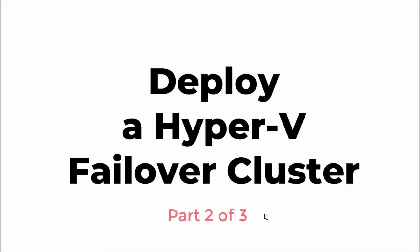Welcome back to part 2 of this video series. In part 2, I'm going to discuss the configuration of an iSCSI target server and the steps required to create a few iSCSI disks, which can be mapped as clustered shared volumes onto Hyper-V hosts. I will also discuss how iSCSI initiators on Hyper-V hosts can be configured to connect to the iSCSI targets to access the iSCSI disks.